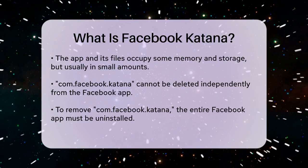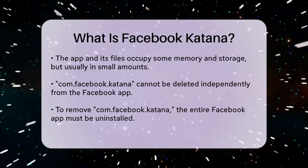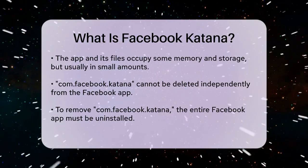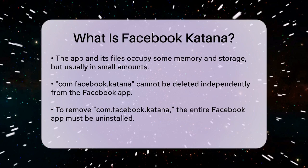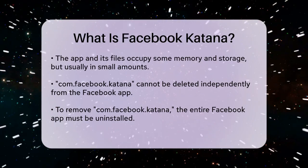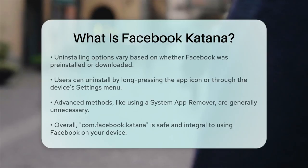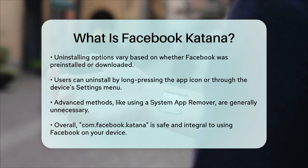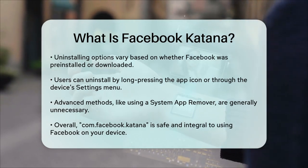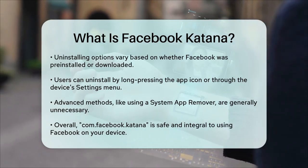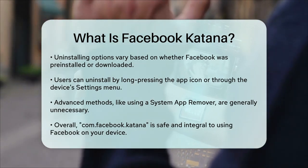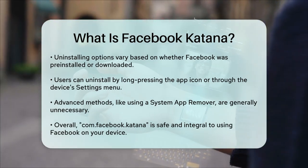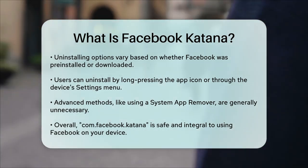To uninstall the Facebook app, you have a few options. If your phone didn't come with Facebook pre-installed, you can simply long press the app icon and select uninstall. If it was pre-installed, you might need to go through your device's settings menu to uninstall it. There are also more advanced methods, such as using a system app remover, but these are generally not necessary.